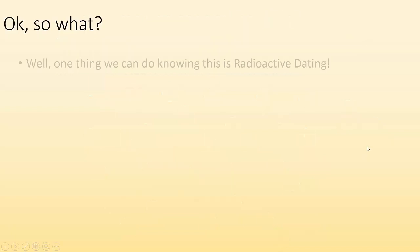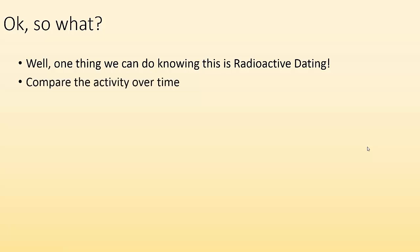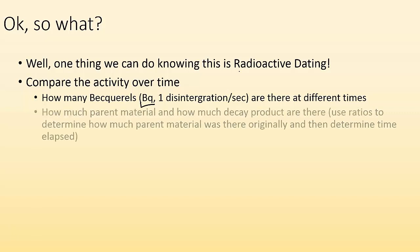Okay, so what? Well, one thing we can do knowing this is radioactive dating. So we can compare the activity over time. If I know something is giving off this much radiation to start with, and after a certain time it's less, I can figure out how much that changes and how long that would take. So we can measure how many Becquerels, which is denoted as Bq, which is basically just one disintegration per second. We can measure that with like a Geiger counter and see how its activity has changed over time to figure out how much time has gone by.